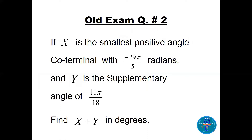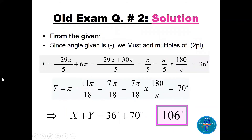Question number two: x is the smallest positive angle coterminal with -29π/5 radians, and capital Y is the supplementary angle of 11π/18. Find x plus y in degrees. We need to do three things: find the coterminal angle, find the supplementary angle, then convert to degrees. So x equals -29π/5, and we add 6π — that is, three complete cycles.